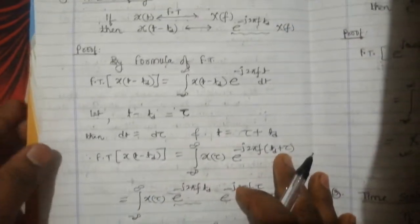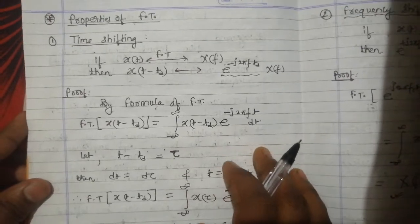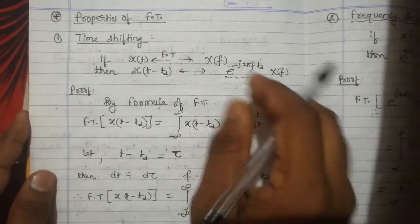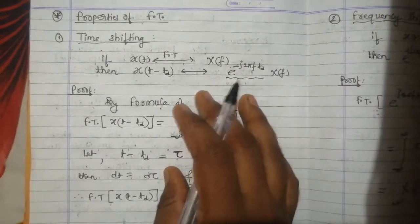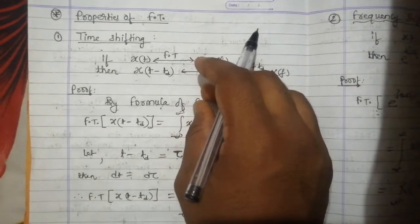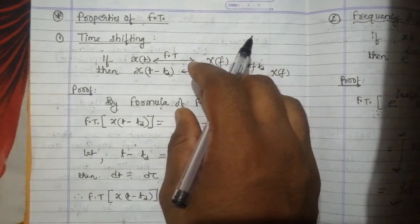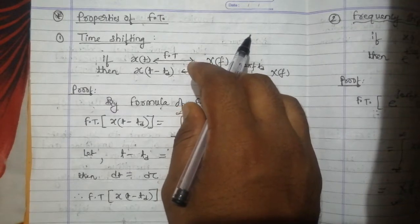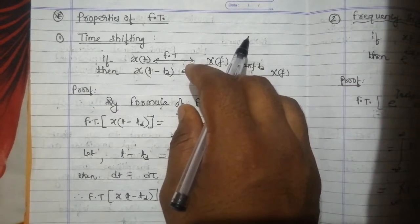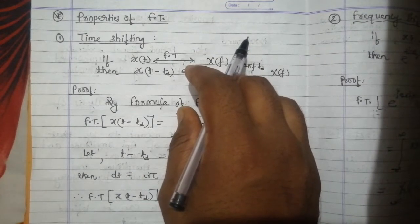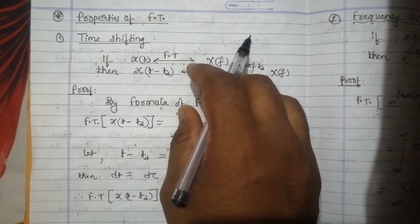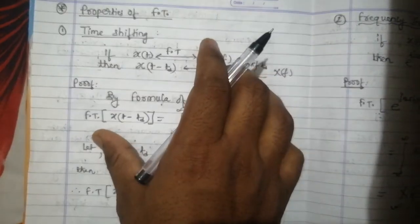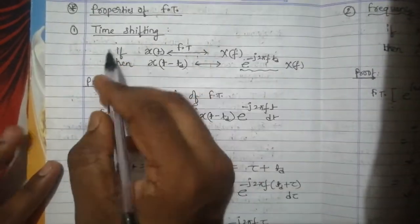Now let us see a few properties of Fourier Transform which are very important from your examination point of view. Generally in examinations, they ask to explain any 2 or 3 properties of Fourier Transform. Out of many properties, there are two or three properties which you have to understand correctly. I have taken a few important properties of Fourier Transform here.